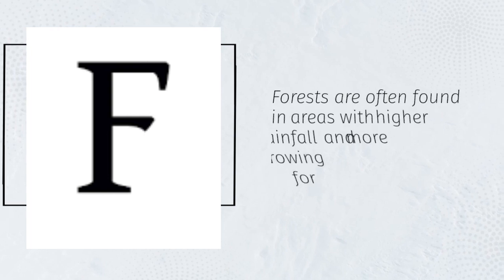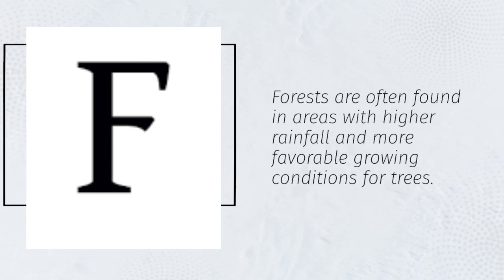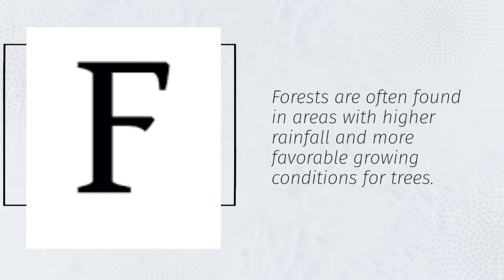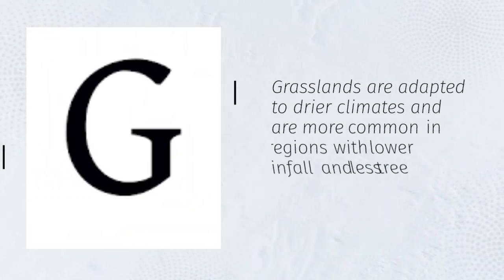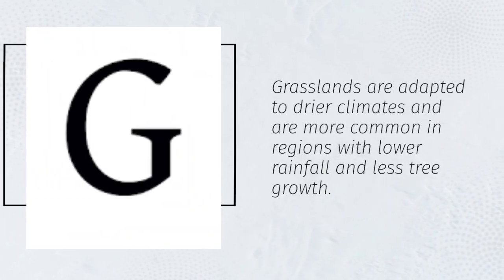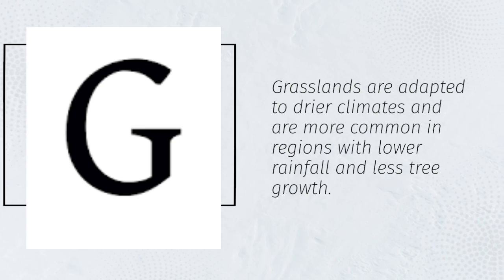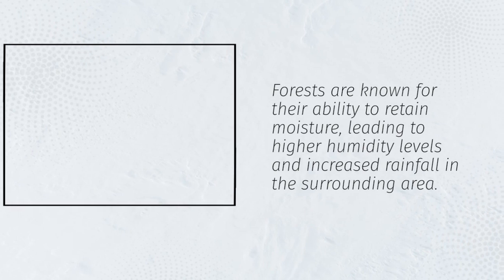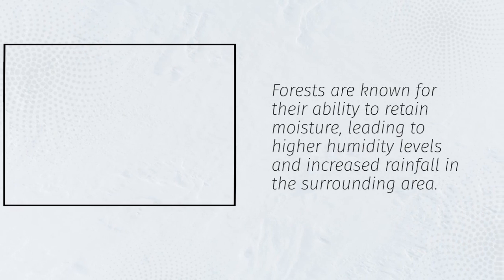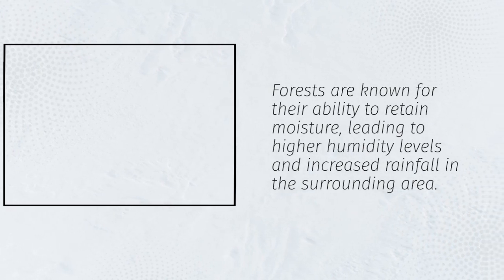Forests are often found in areas with higher rainfall and more favorable growing conditions for trees. Grasslands are adapted to drier climates and are more common in regions with lower rainfall and less tree growth. Forests are known for their ability to retain moisture, leading to higher humidity levels and increased rainfall in the surrounding area.